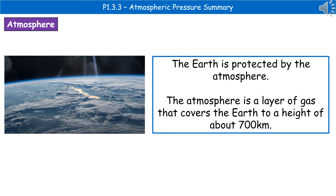Welcome to our review on atmospheric pressure. When we're talking about the atmosphere, what we're talking about is the layer of gas that covers the Earth to a height of about 700 kilometers. And it acts as a form of protection for the Earth, because without that atmosphere, we certainly wouldn't have life on Earth, including us.